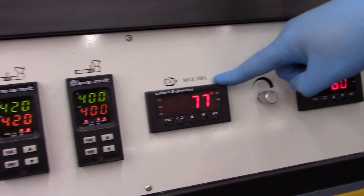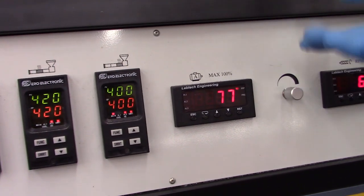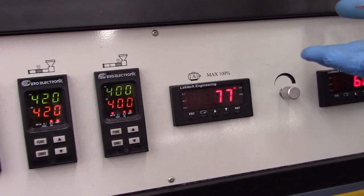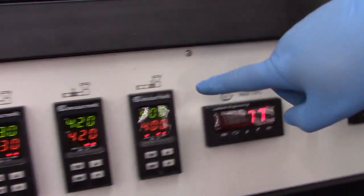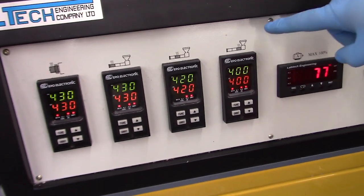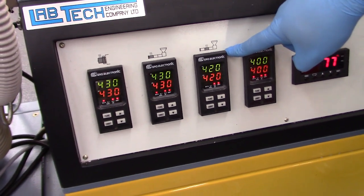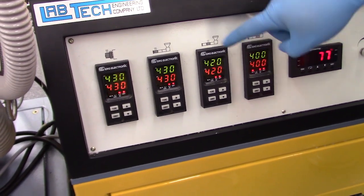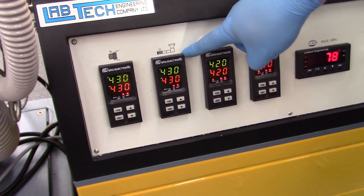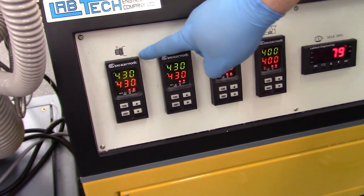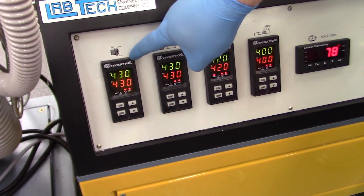We have our motor load, measuring how hard the drive motor is working to turn the screw. We have our zone one temperature, 400 degrees Fahrenheit, zone two is 420 degrees Fahrenheit, zone three is 430 degrees Fahrenheit, and our end zone is 430 degrees Fahrenheit.